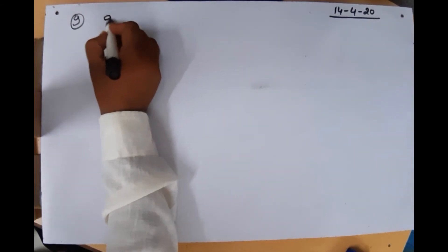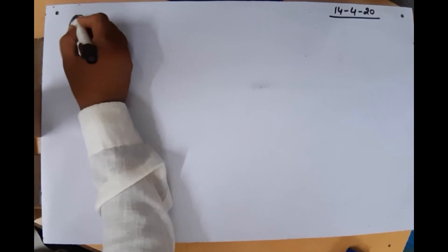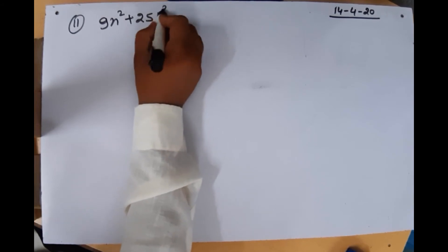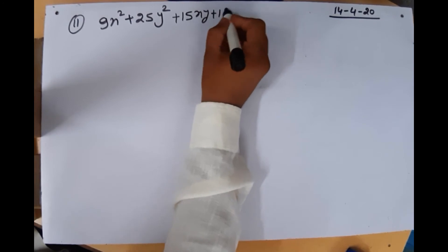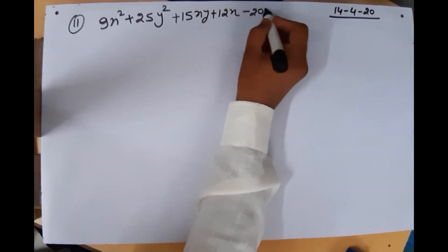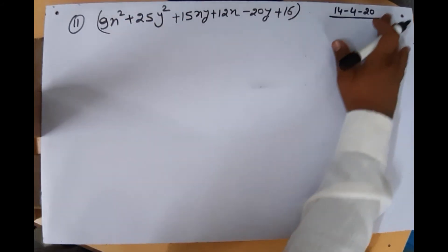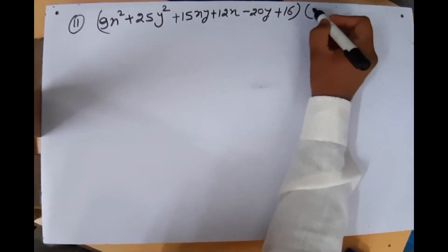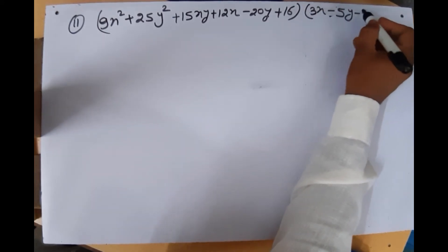Now the next question: 9x² + 25y² + 15xy + 12x − 20y + 16, and this is to be multiplied by (3x − 5y − 4).